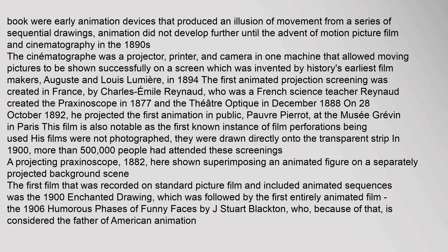On 28 October 1892, Reynaud projected the first animation in public — Pauvre Pierrot — at the Musée Grévin in Paris. His films were not photographed; they were drawn directly onto the transparent strip. By 1900, more than 500,000 people had attended these screenings. The first film recorded on standard picture film that included animated sequences was the 1900 Enchanted Drawing.